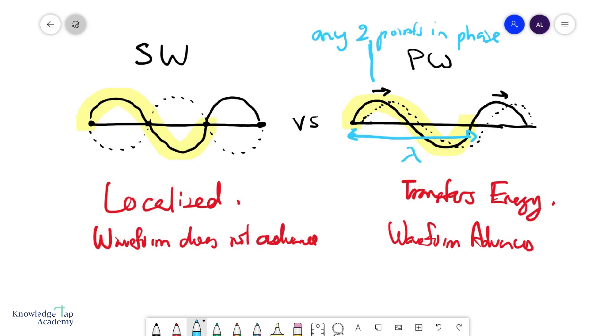For a stationary wave, this would be the distance—let me just write this down somewhere—this will be twice the distance between any two adjacent nodes or adjacent antinodes. So this is how we describe these.